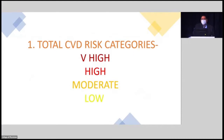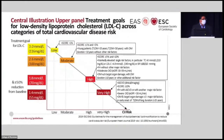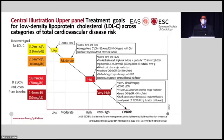Total cardiovascular disease risk categories are very high, high, moderate, and low. The treatment goals to achieve the desired LDL target are based on an individual's cardiovascular disease risk status. This slide shows the risk categories and various people who fall into those categories. On the Y-axis you get the desired LDL levels as well as a more than 50% reduction from baseline: very high category 55 mg/dL, high 70, moderate 100, and low 116.